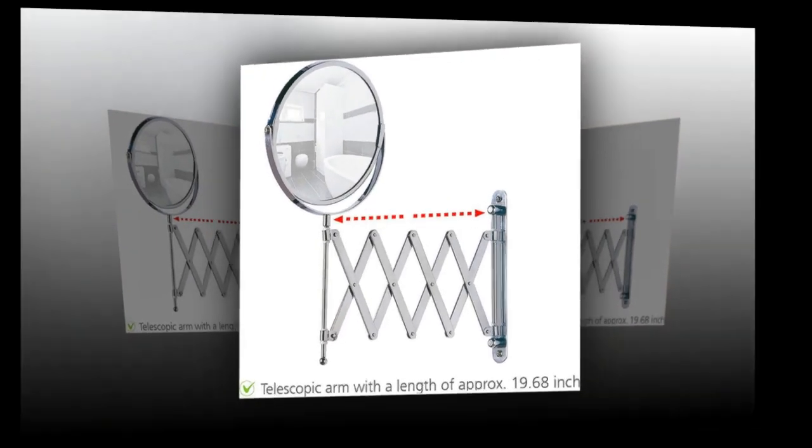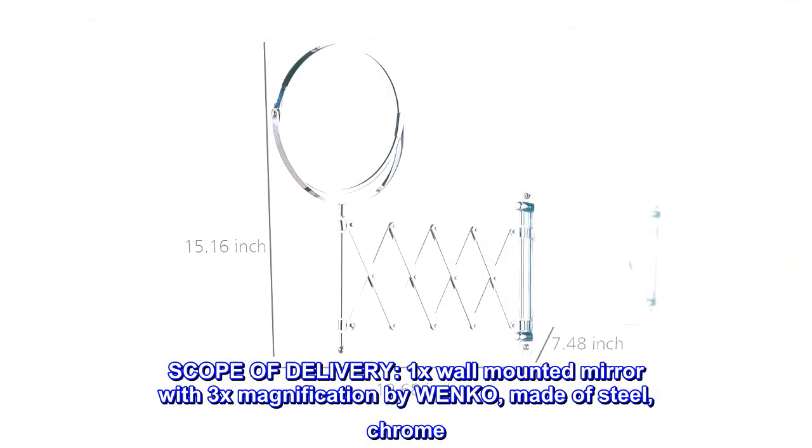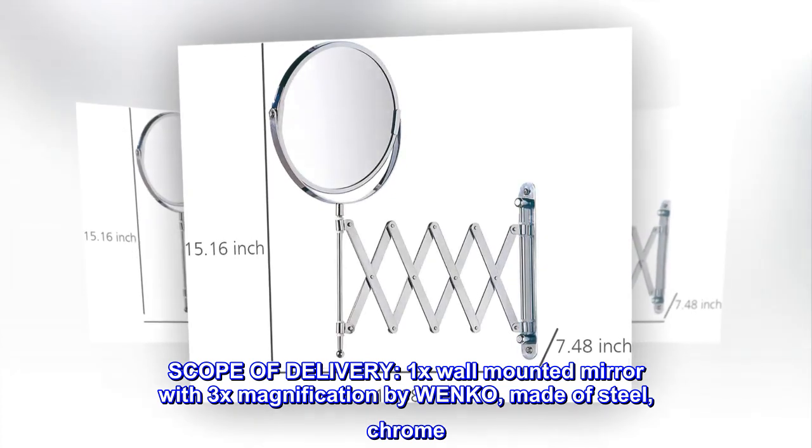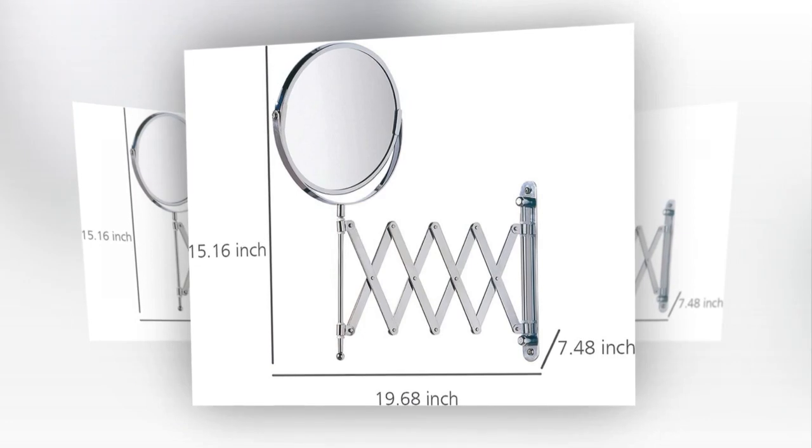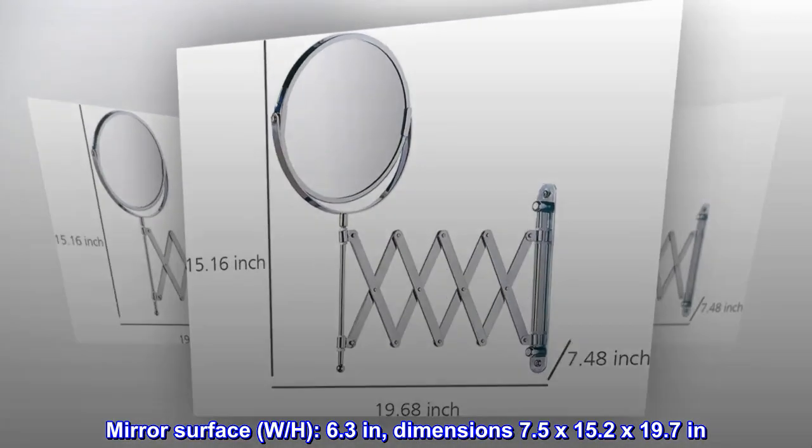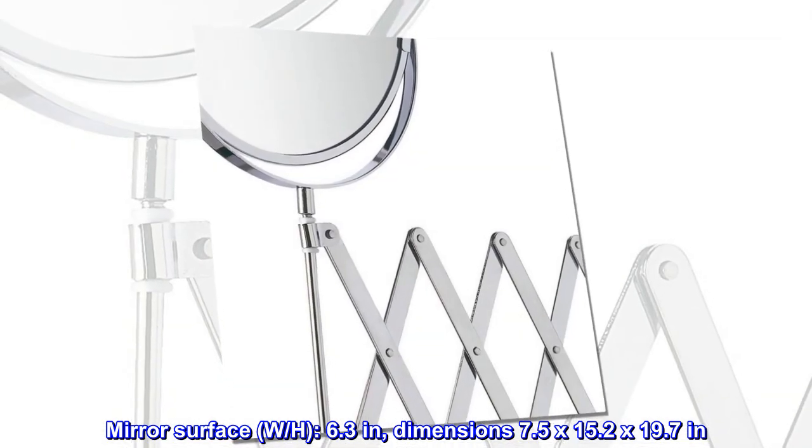Scope of delivery - 1x wall mounted mirror with 3x magnification by Wenko, made of steel chrome. Mirror surface with diameter 6.3 inches. Dimensions: 7.5 by 15.2 by 19.7 inches.